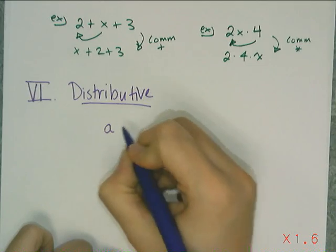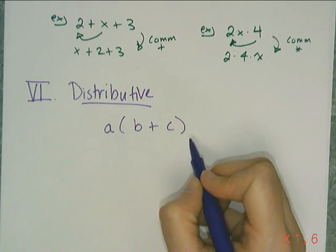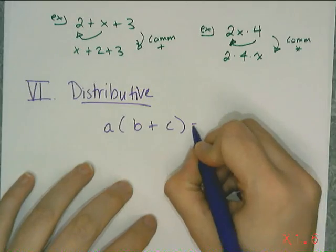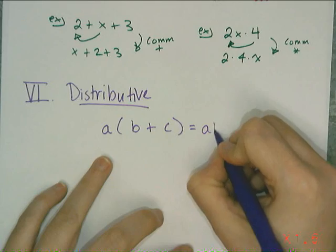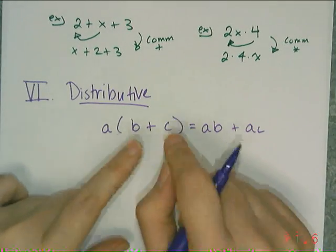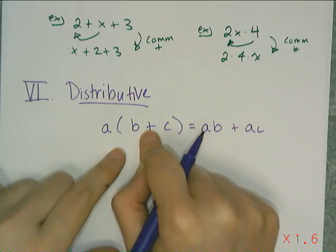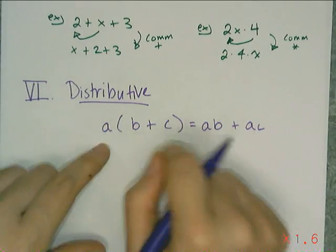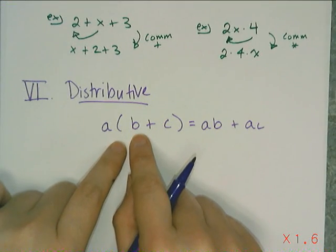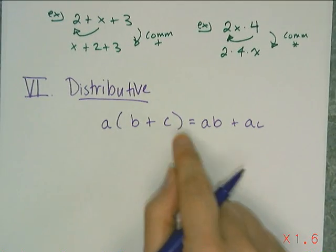The distributive property deals with grouping symbols and multiplication with addition. If I have a times the quantity (b + c), and I can't combine b and c because they're different terms, I can get rid of the parentheses by multiplying a × b and a × c and adding them together. So a(b + c) = ab + ac. There's only one version of this property. Sometimes you see the a moved to the other side, but that's just the commutative property. The distributive property also works in reverse — if you see ab + ac, you can rewrite it with parentheses, which is called factoring.